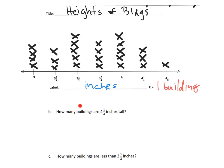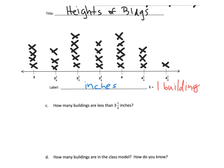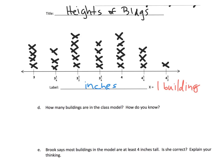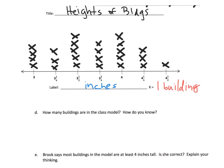Now we're going to answer questions from the line plot. For example, how many buildings are exactly four and a quarter inches tall? We can see that's three of them. How many buildings are less than three and a half inches? That does not include three and a half — it's all the ones that are less than three and a half. This is a classic opportunity for a word wall, because 'less than,' 'more than,' 'exactly,' 'at least,' 'fewer than' — all of these are really important phrases that might get tricky, especially for English language learners. How many buildings are in the class model? Well, it's 25, or we could count up all of the X's.